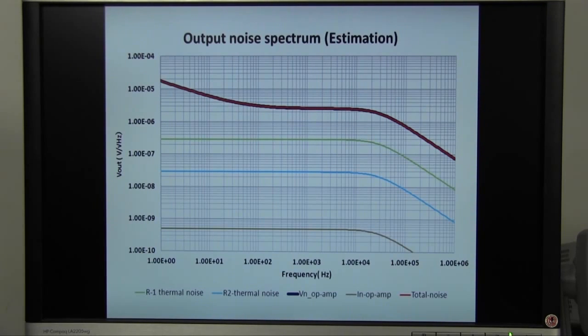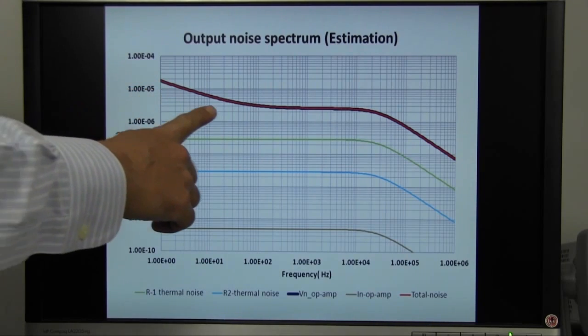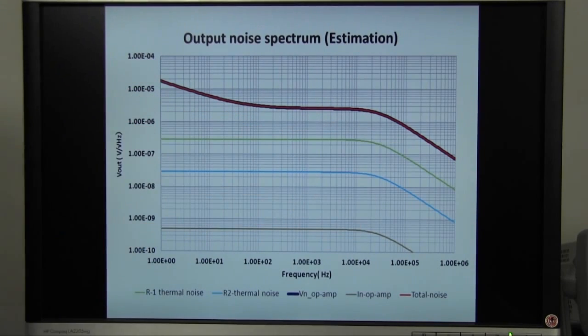This graph shows the estimated output noise calculated by using the previous equation. You can see that the output noise and the op-amp's input voltage noise effect is almost overlapped. See the dark blue and red lines. This means that the op-amp's input voltage noise is dominant.